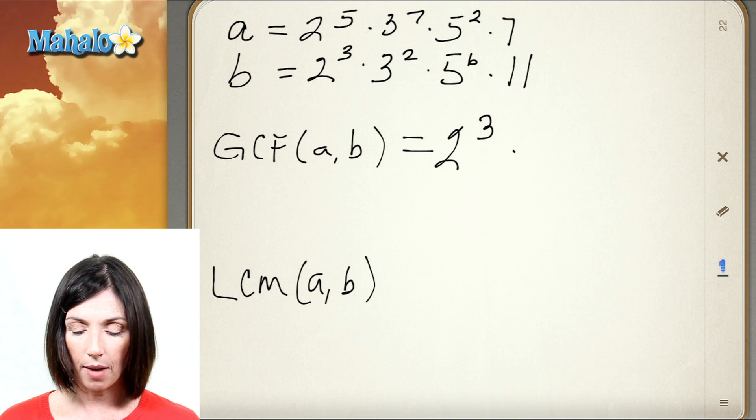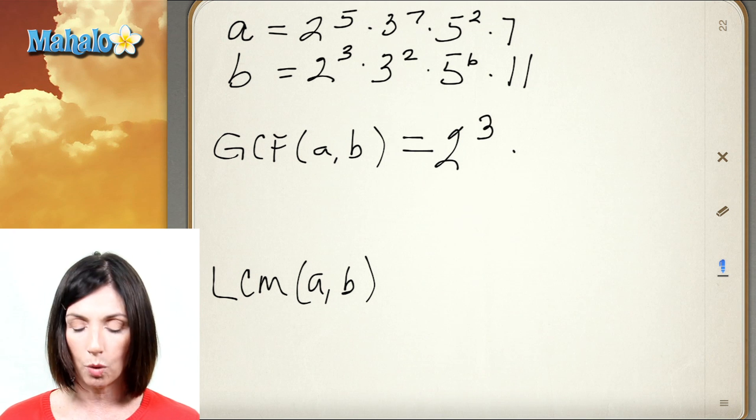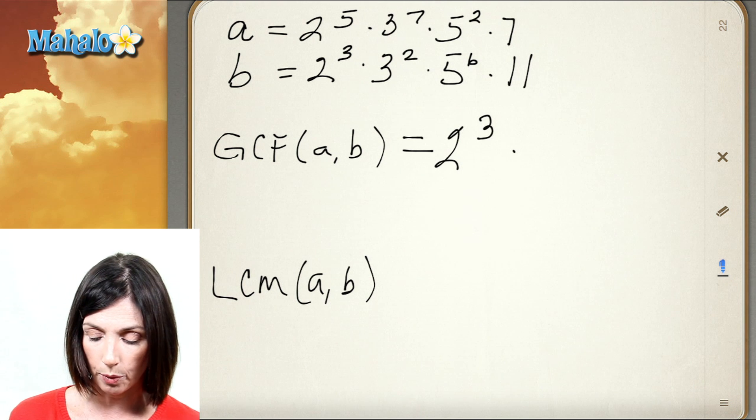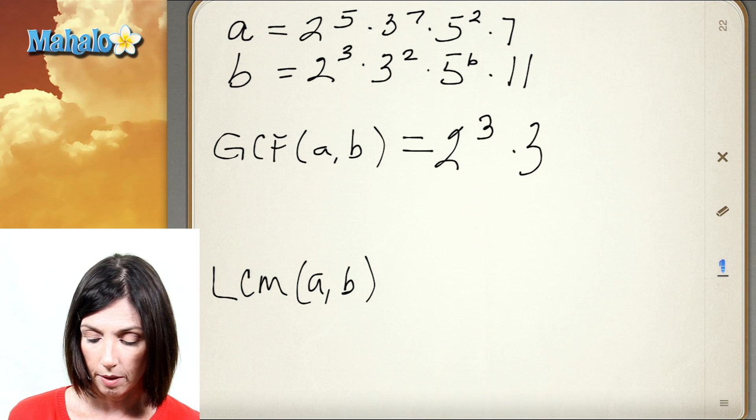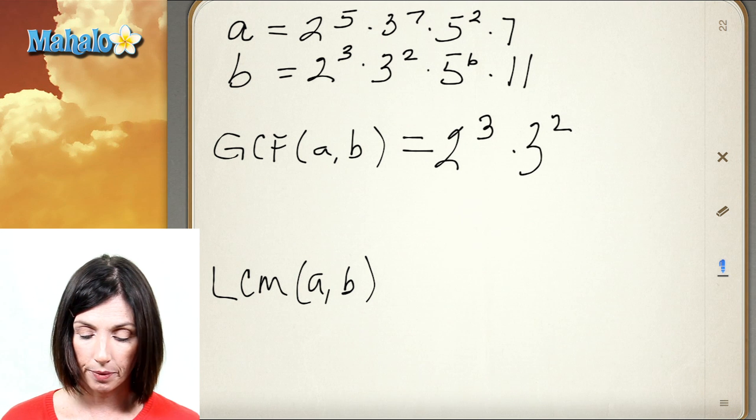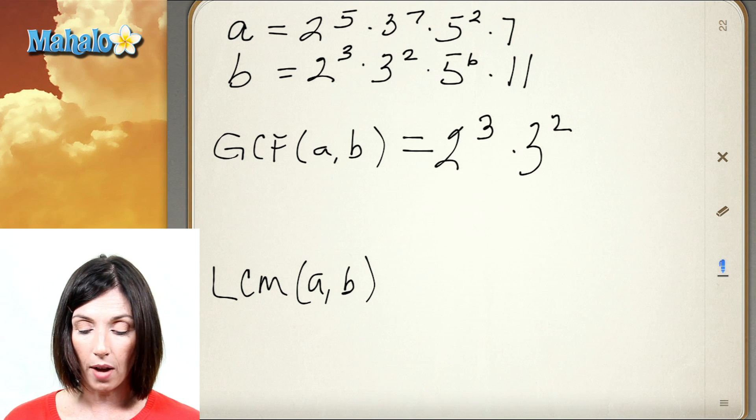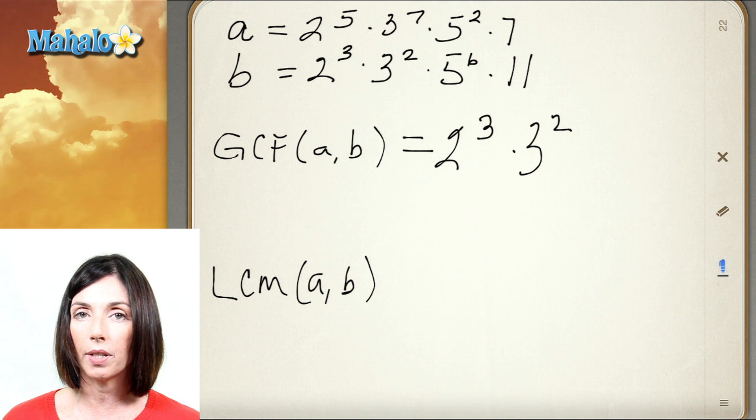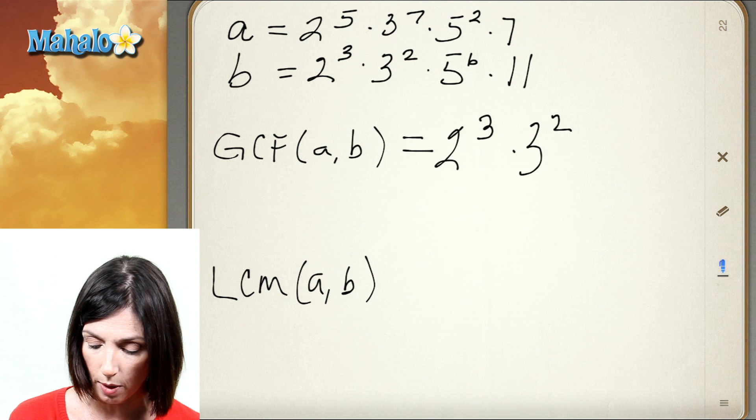What about the 3's? I have a 3 to the seventh and a 3 squared. Okay, so I have to take the 3 squared. That's what they have in common. They both have a factor of 5. One's got a 5 squared, the other has a 5 to the sixth. So I'm going to take the 5 squared.